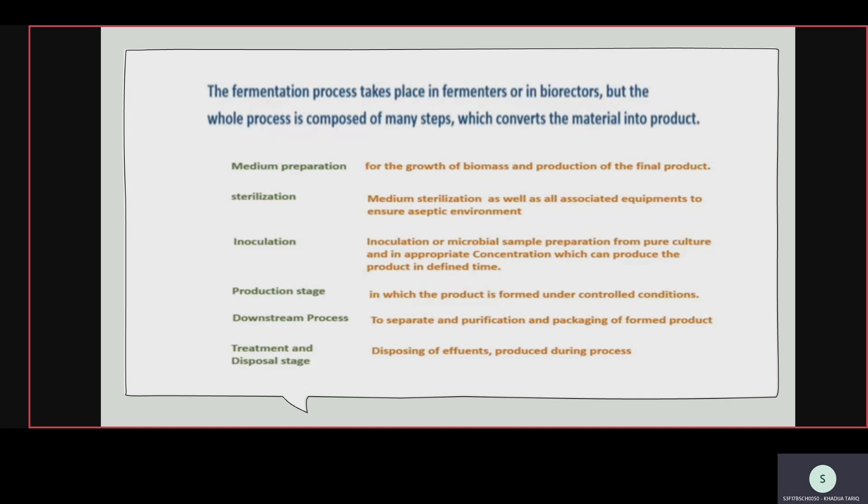The production stage means the product is formed under controlled conditions — pH, temperature, carbon dioxide level, and other operating system factors are also controlled. Downstream process: after production, the product is formed then separated by downstream process, then purified again, and then packaging of the formed material takes place.